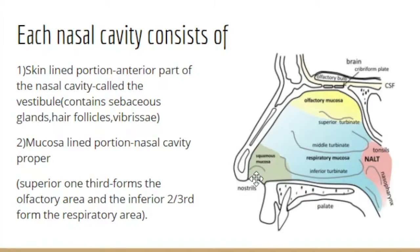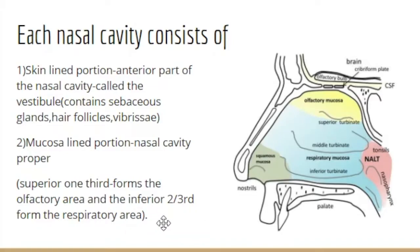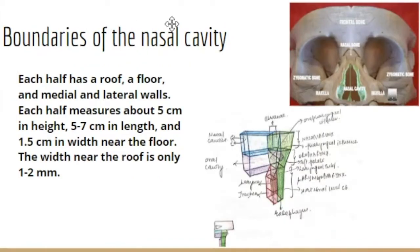Just at the opening of the nostrils in the anteriormost portion we have the skin-lined portion, which is composed of sebaceous glands, hair follicles, and vibrissae — the fine nasal hairs. Posterior to that is the mucosa-lined portion. In the upper one-third of this portion we have the olfactory mucosa, involved in the perception of smell. The inferior two-thirds forms the respiratory area, which has conchae and meatuses that form the nasal passages involved in humidification and warming of the air.